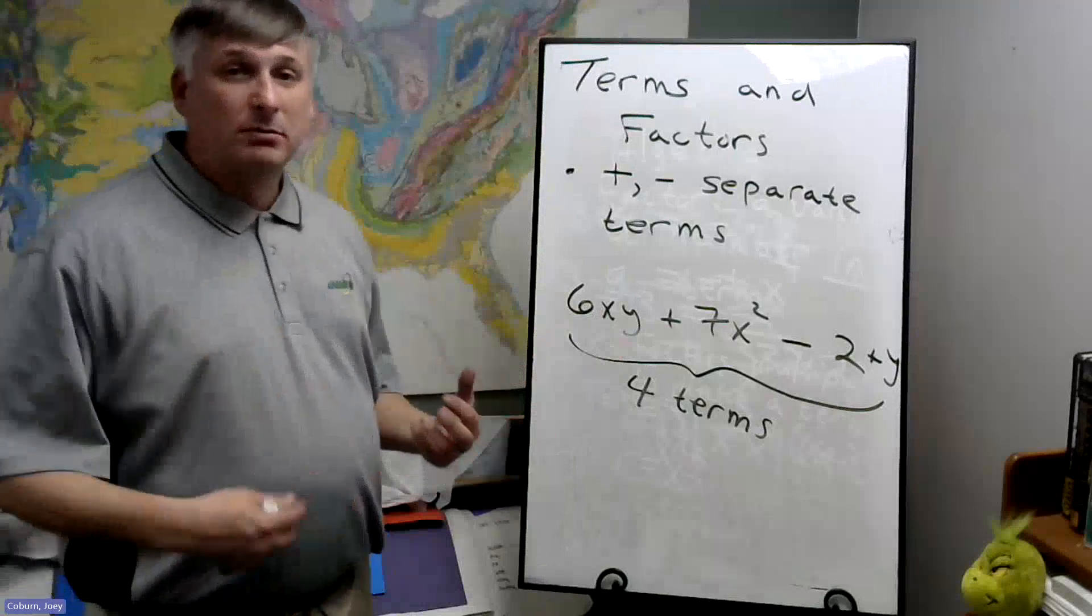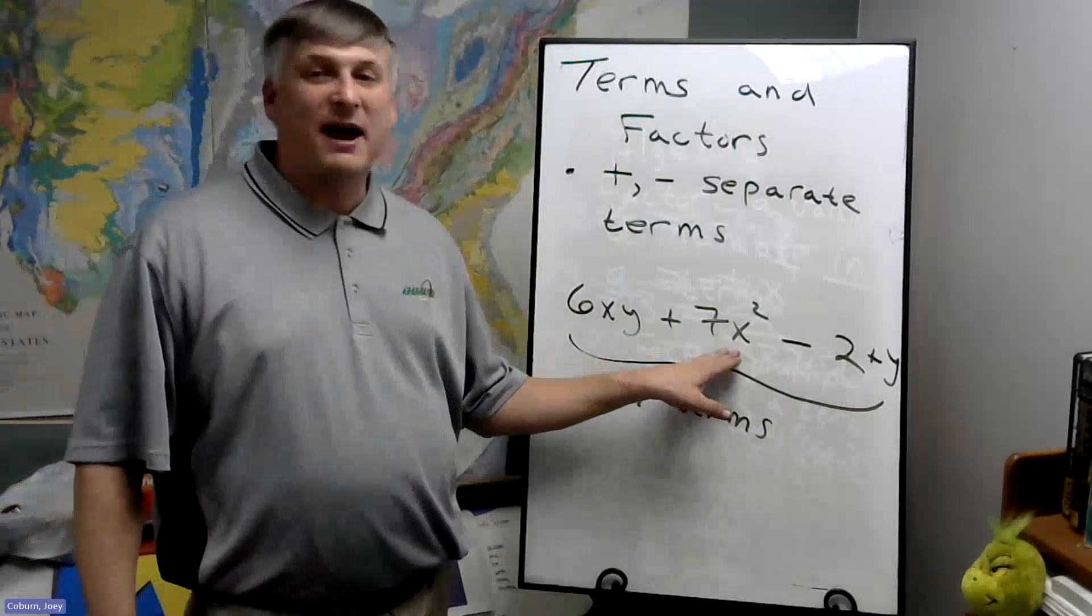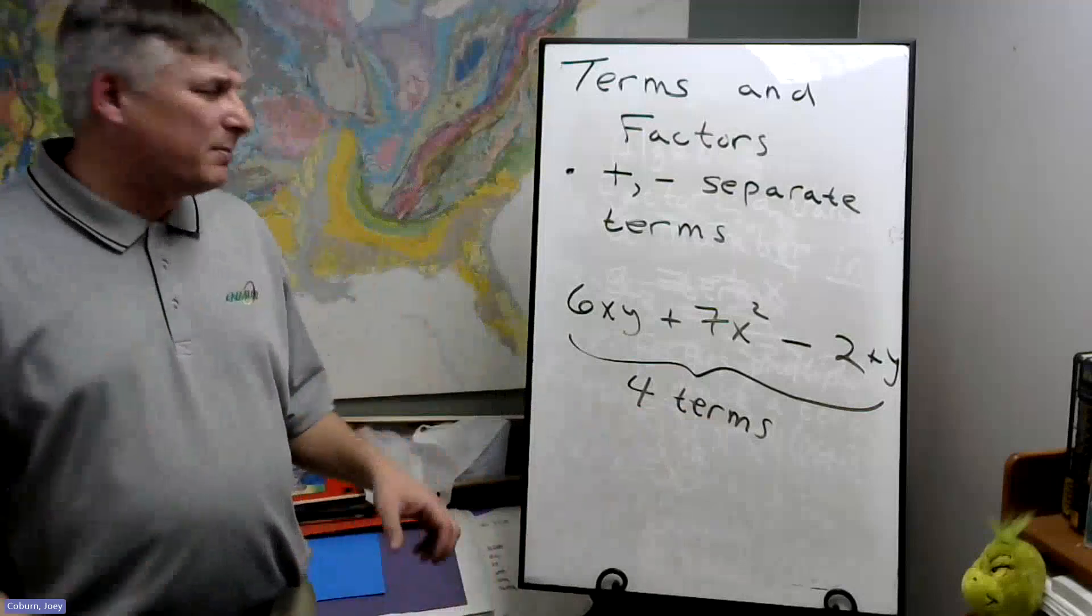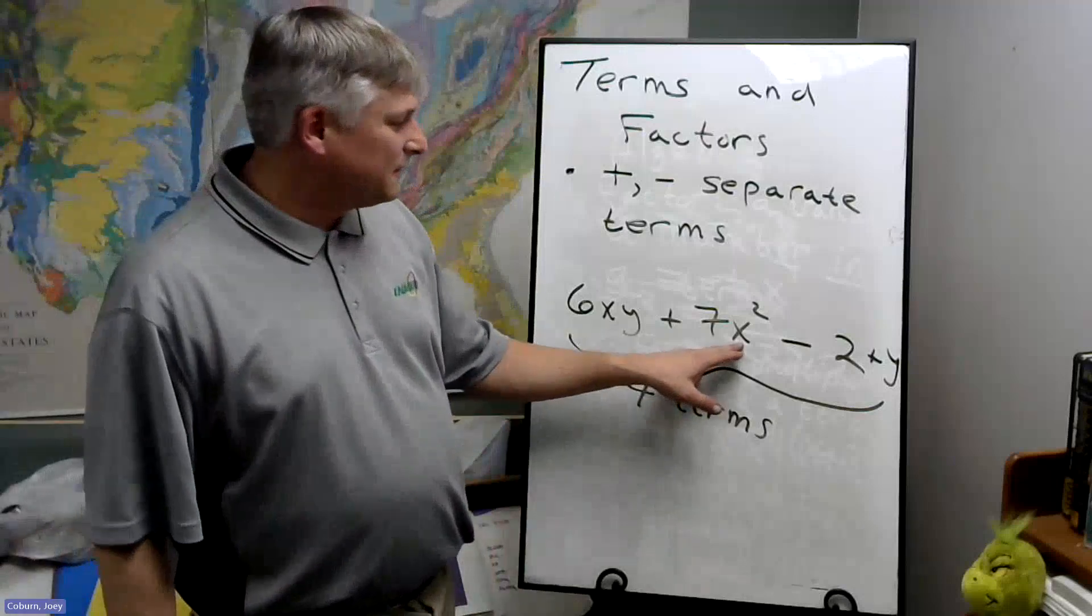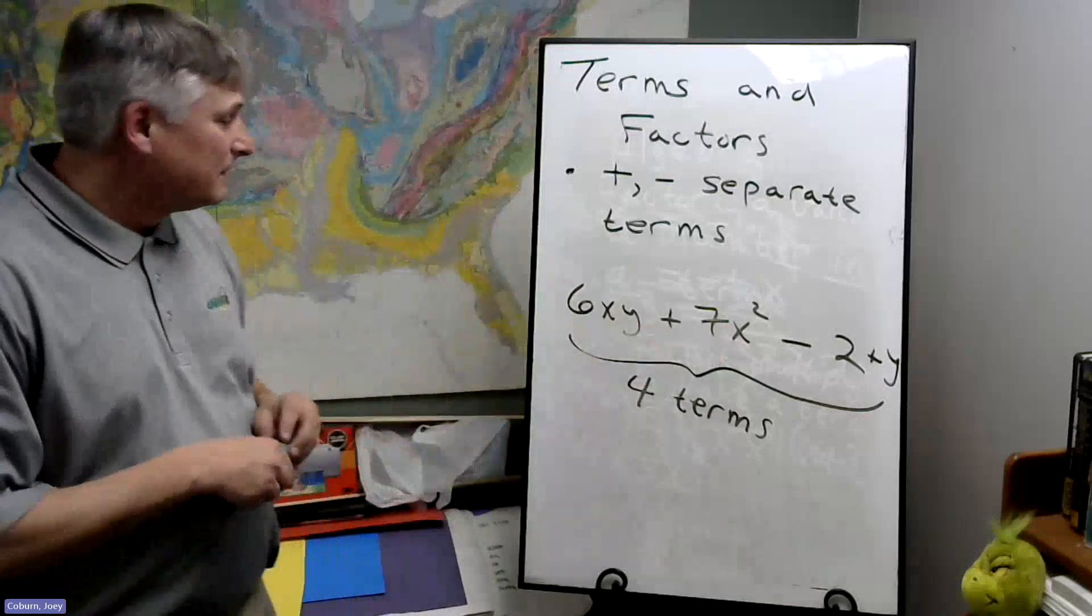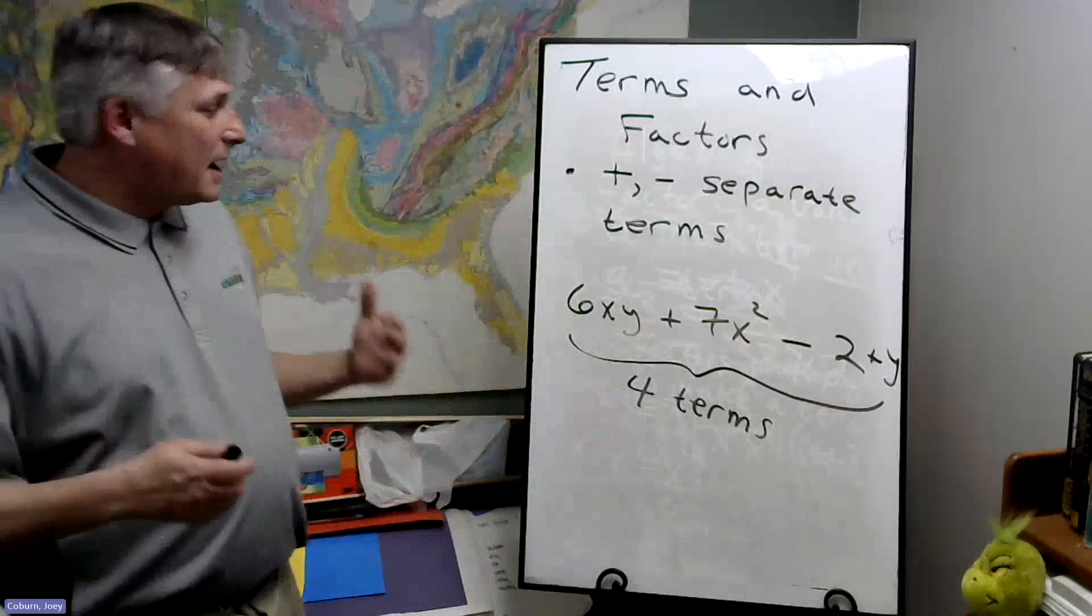You could argue there's three factors here, the seven and pair of X's. Though sometimes people might treat this X squared as a factor and the seven as a factor, but you could also think of it the other way too. So that's what we've got.